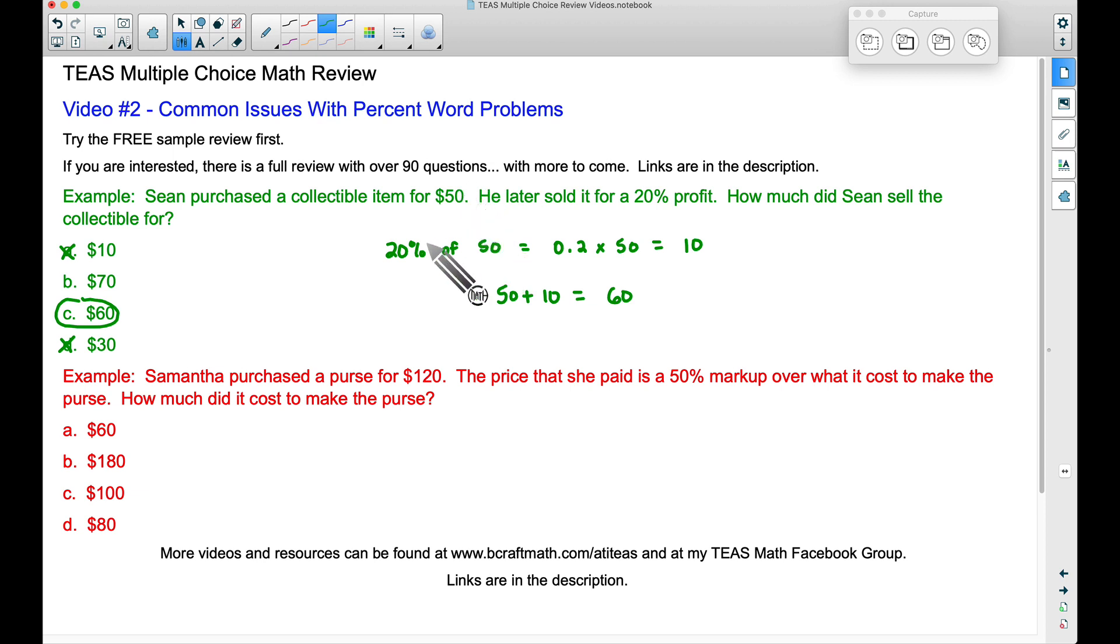The quickest way to do that is to multiply them. That's the profit that Sean made, but since the question said how much did Sean sell the collectible for, we need to add that 10 bucks back to the 50. This is what he sold the collectible item for, $60.